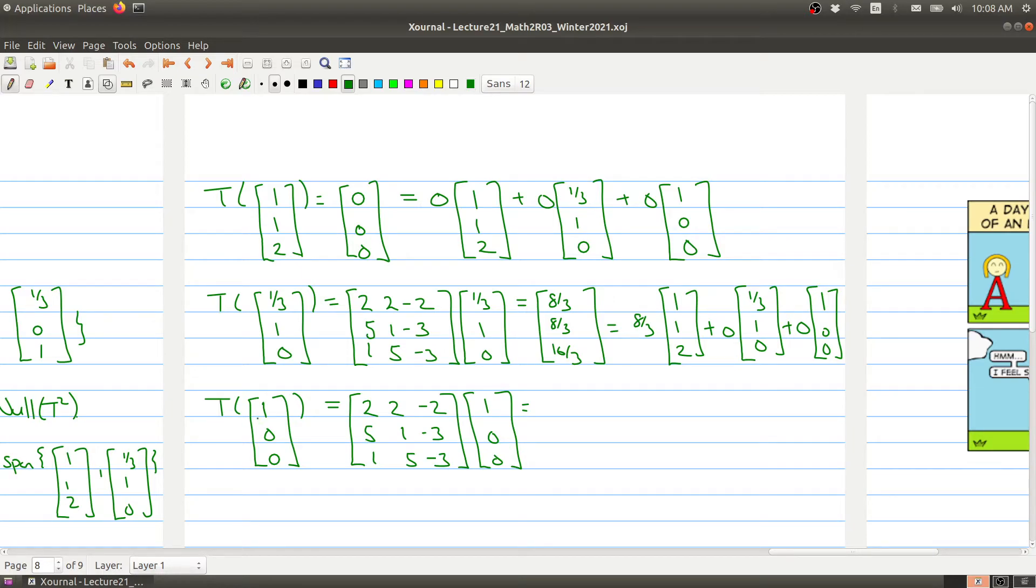And then finally, we ask where does the vector map take 1, 0, 0. Well, it takes the matrix, multiplies it by the vector 1, 0, 0. And this gets sent to 2, 5, 1.